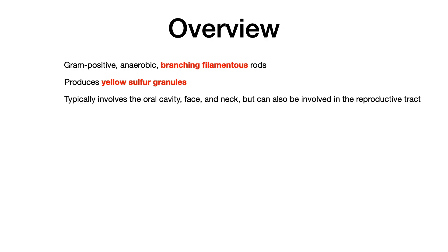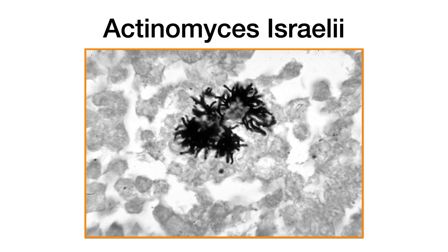When it comes to Actinomyces, the key thing you need to know is that this pathogen produces yellow sulfur granules, and the infection typically involves the oral cavity, the face, and the neck, but it can also involve the GI system and the reproductive tract. Here's a brief picture — appreciate the branching filaments of this bacteria.